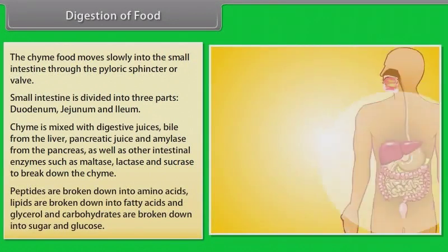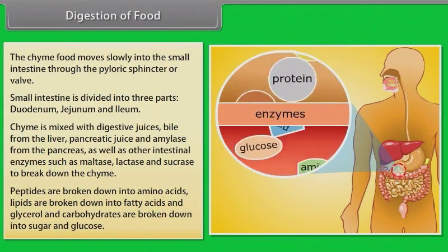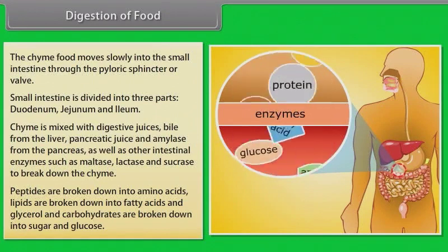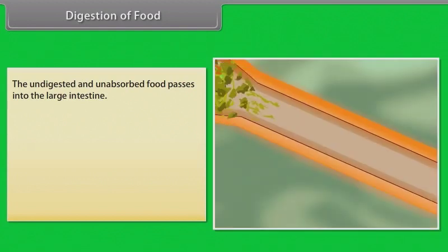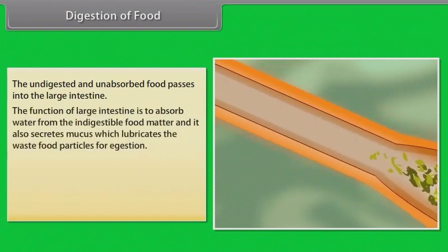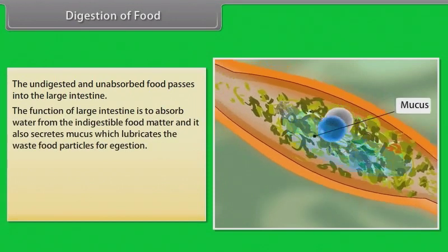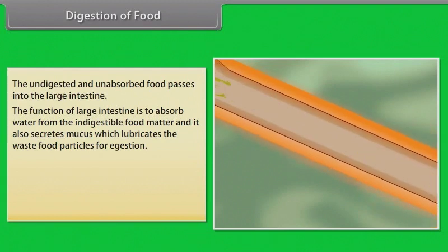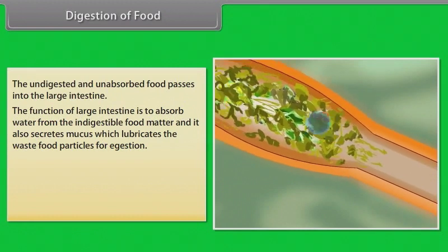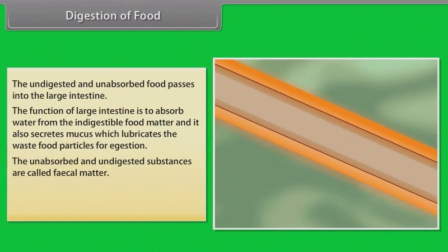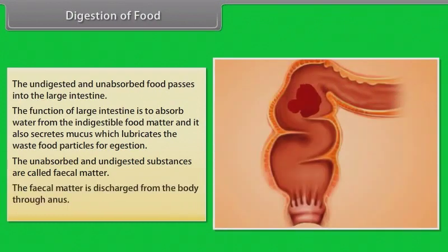Peptides are broken down into amino acids, lipids into fatty acids and glycerol, and carbohydrates into sugars and glucose. The undigested and unabsorbed food passes into the large intestine, which absorbs water from the indigestible food matter and secretes mucus to lubricate waste particles. The unabsorbed and undigested substances are called faecal matter, which is discharged from the body through the anus.